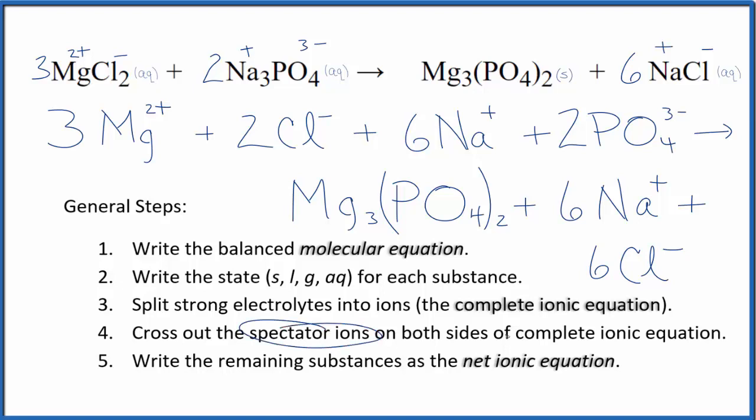Now we can cross out spectator ions. When I look at the reactants and the products, I see 2 chloride ions here and 6 here, and that makes me kind of suspicious. So I can see right away 3 times 2. That doesn't give me 2. That gives me 6. So I need to fix that.